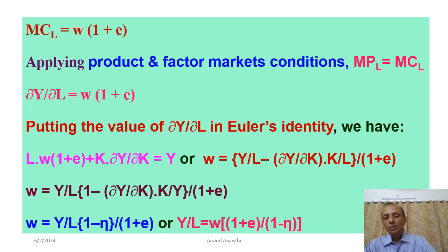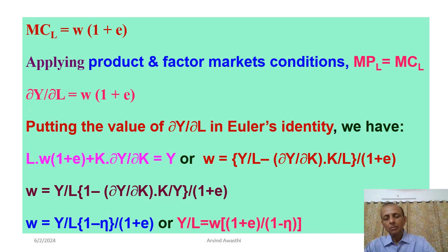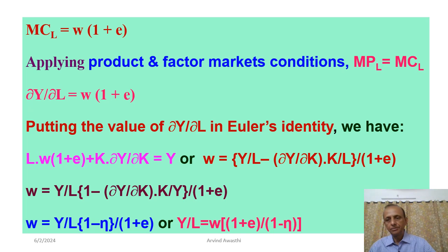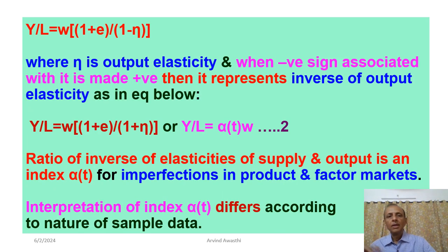अब delta Y/delta K into K/Y — यह output elasticity है, partial elasticity of output with respect to capital — इसको हमने Eta (η) से indicate किया है। तो W = (Y/L) into (1 minus Eta) upon (1+E)। Y/L की value निकालने पर: Y/L = W·(1+E) upon (1 minus Eta)।